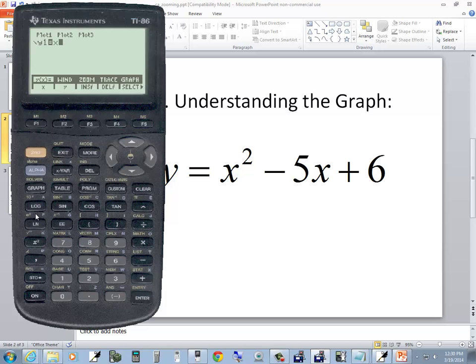Press my x bar. I push my x squared, wherever that's at. There it is. Okay, x squared minus 5x plus 6.